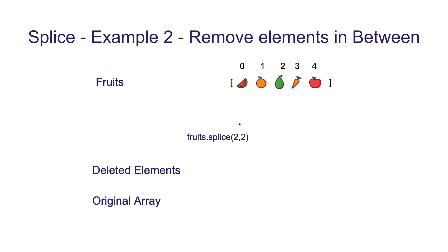In example 2, we are going to use splice to remove elements in between the array. We have the array with 5 fruits and we call splice with parameters 2 and 2, meaning we want to delete 2 elements starting from index 2. This results in the deleted array containing elements at index 2 and 3, and the original array is updated accordingly.